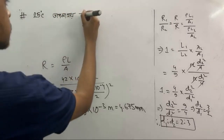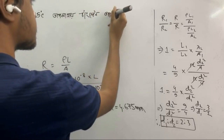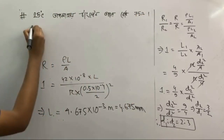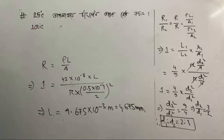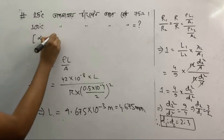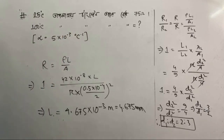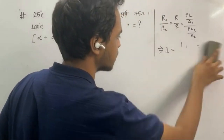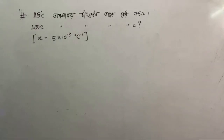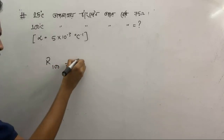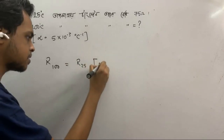Tungsten wire problem. The resistivity of tungsten is given. At 5 into 10 degrees temperature, R2 equals R1 into (1 plus alpha into delta theta), where alpha is the temperature coefficient.